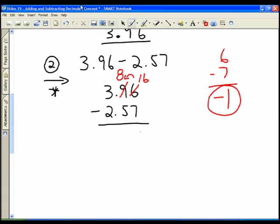And so now we can go ahead and do our subtraction. Sixteen minus seven is nine. And now we use the eight. Eight minus five is three. And three minus two is one. So when we subtract these two, we'll end up with 1.39.